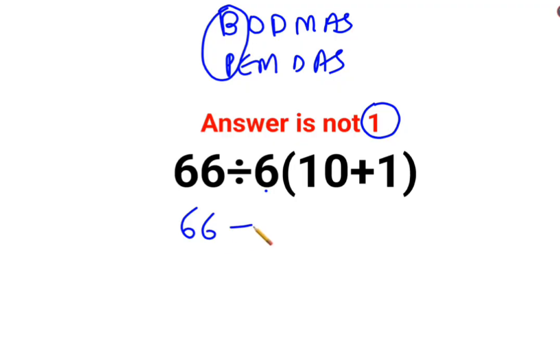So we will keep the rest of the question as it is. And since there is no sign between 6 and the bracket, it means multiplication. And the bracket is what? 10 plus 1 which is 11.